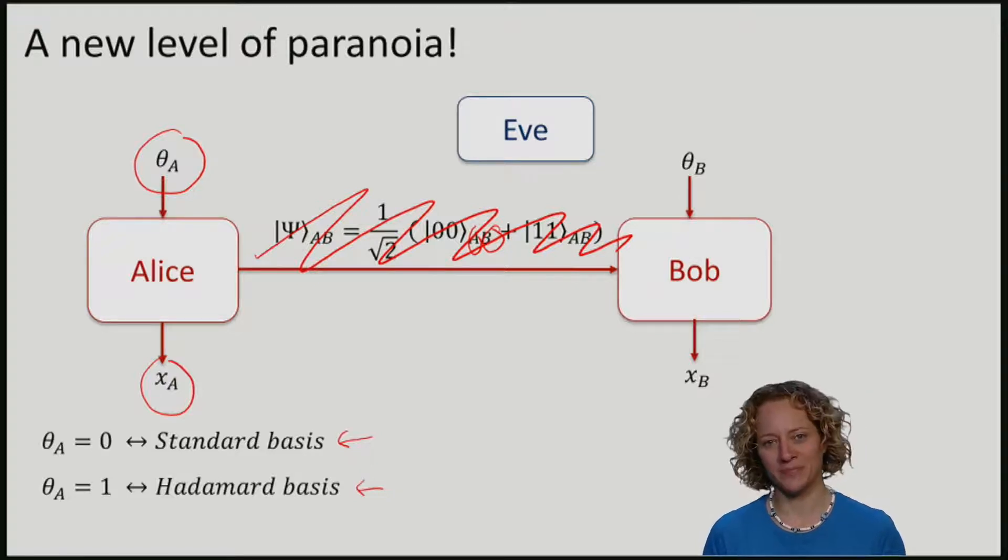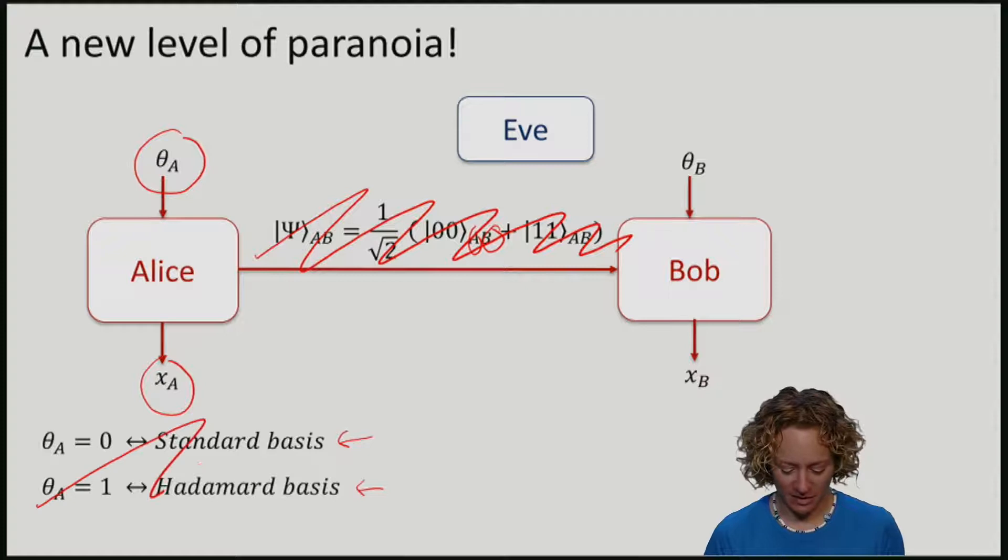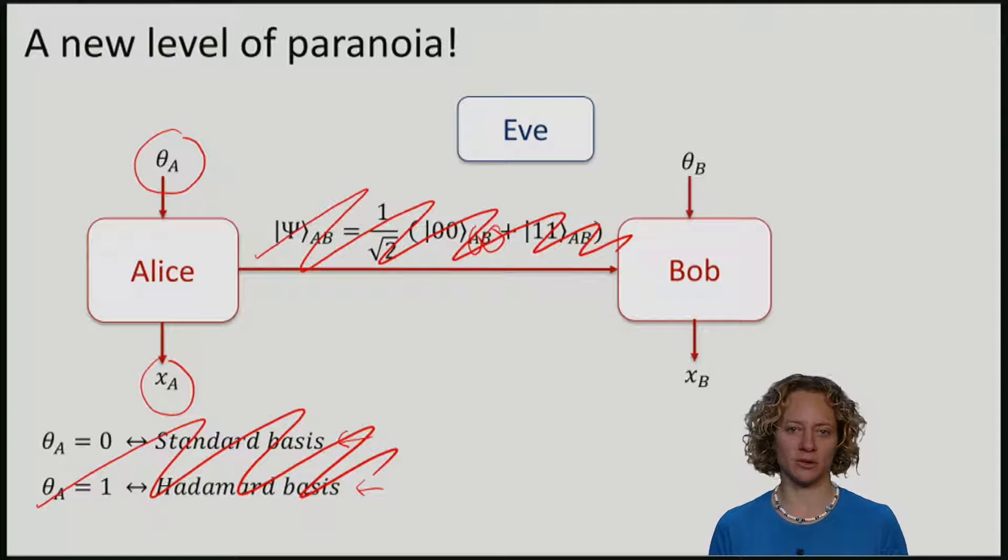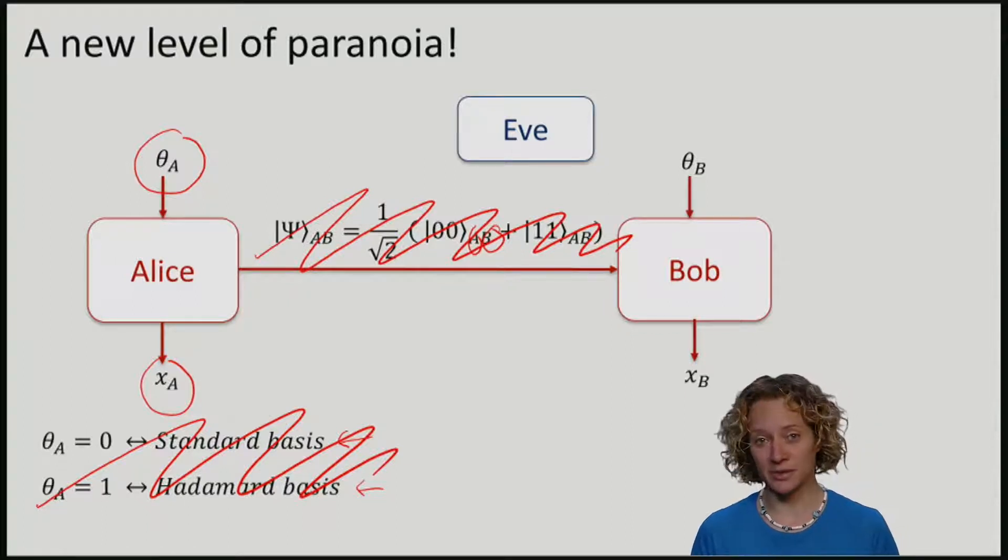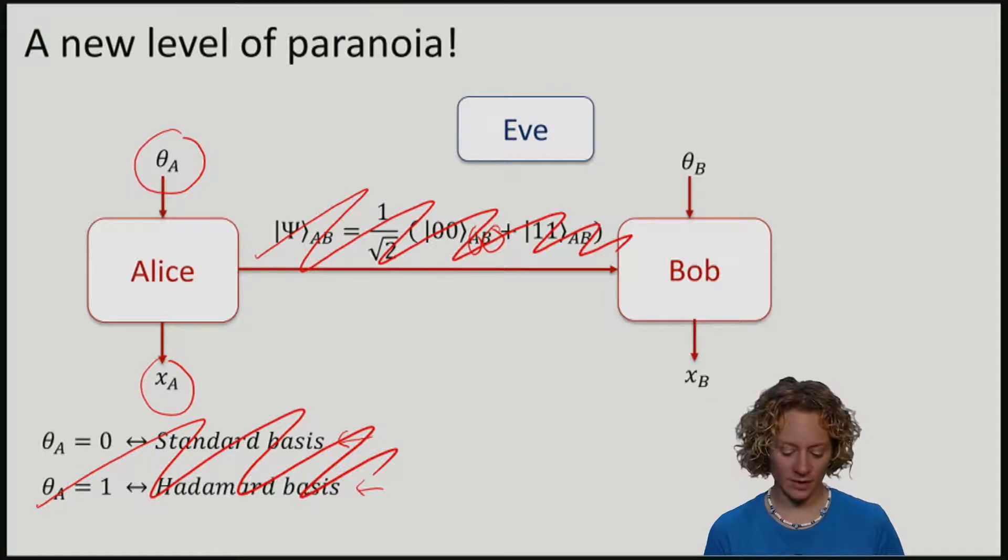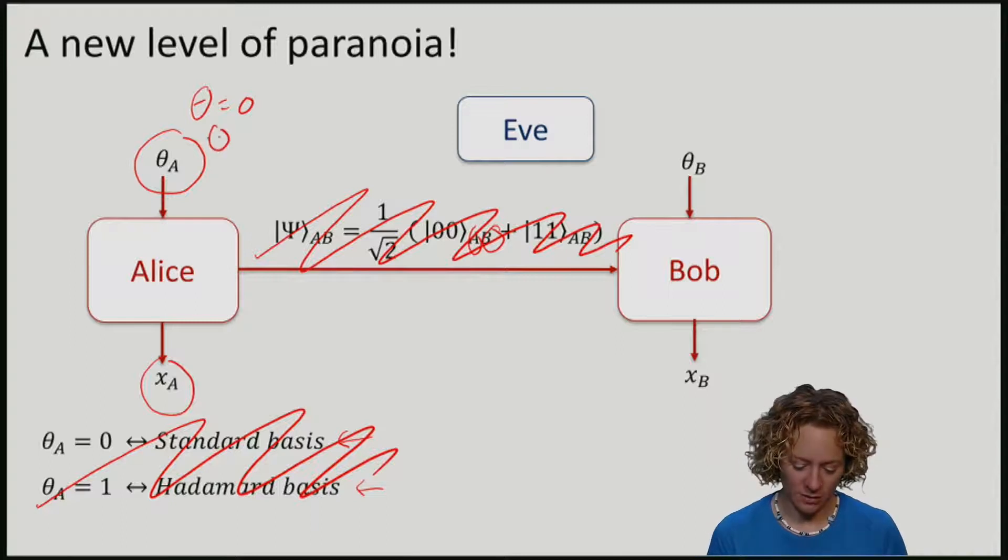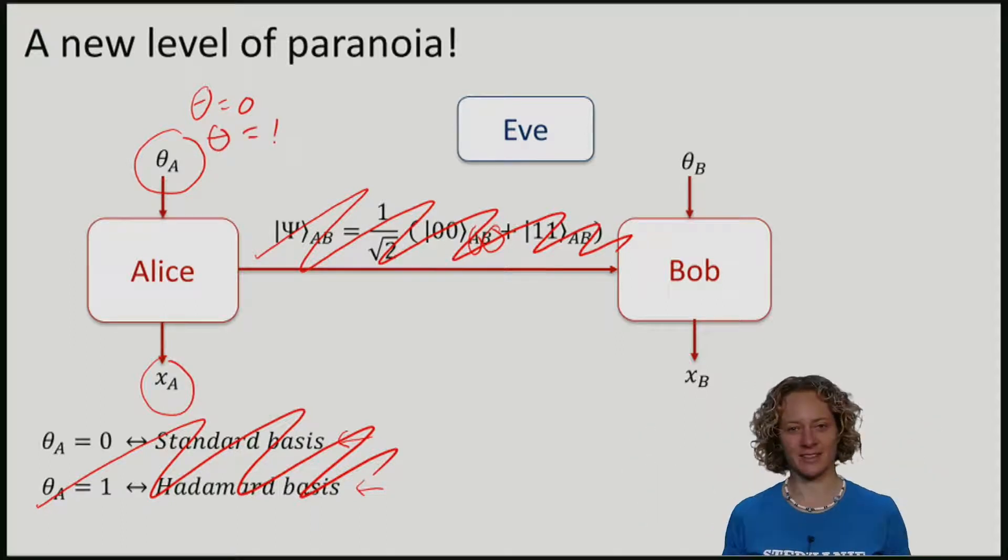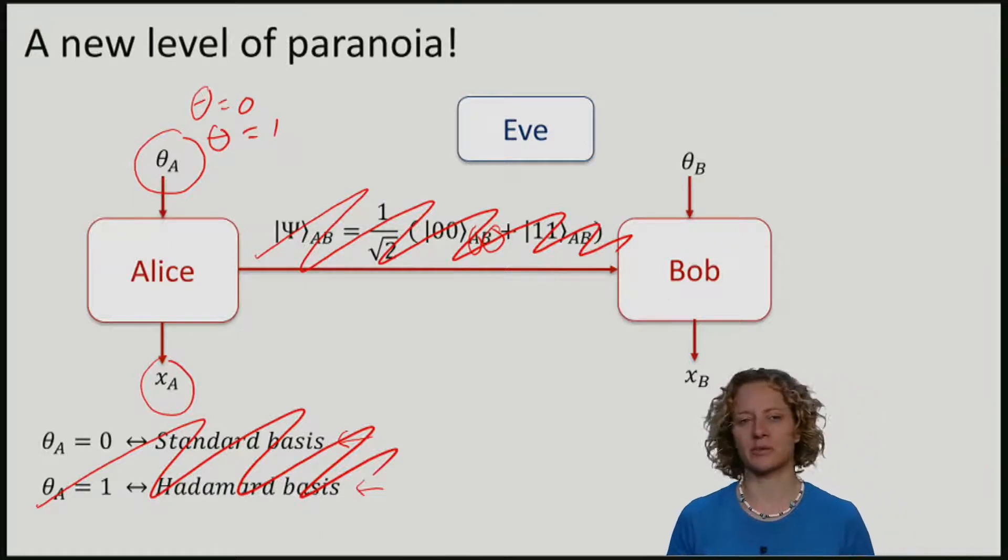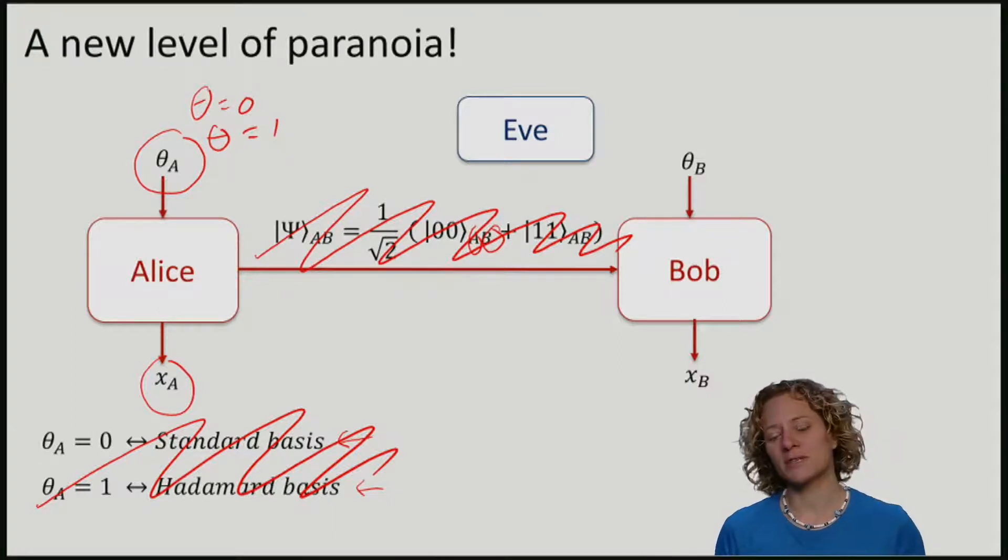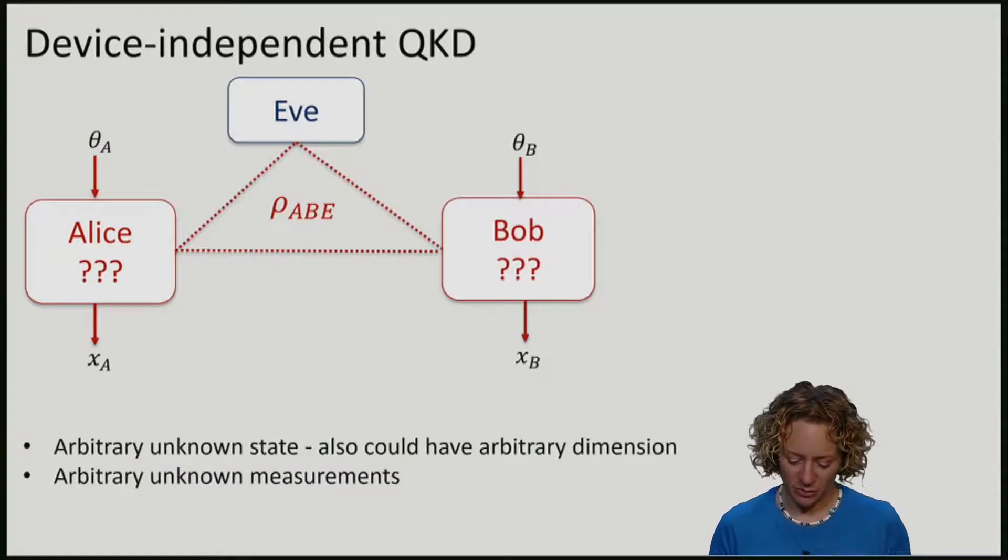And the same for Bob. Now we are going to take this away. I have no clue what basis is actually going to be measured in. Instead, I will think about Alice's measurement device as a black box. I can tell this box, theta is zero, please measure in the standard basis. Or I can tell the box, theta is one, please measure in the Hadamard basis. But I have no clue what the box really does. The box will produce an answer, xa, but this could come from any measurement.